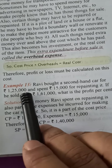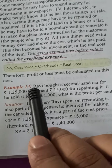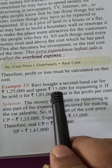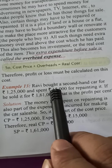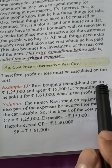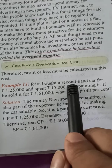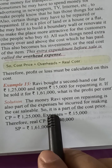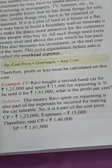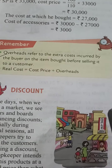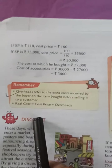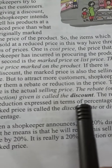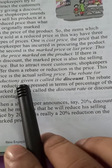The original cost of the car is one lakh twenty-five thousand, and after that he went for repainting or repairing — whatever extra cost, that is fifteen thousand. So this is the overhead expense. Now the next topic is discount.